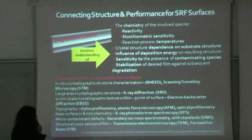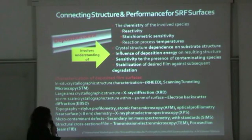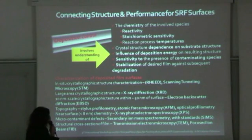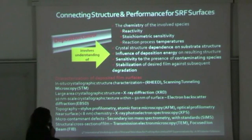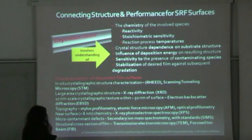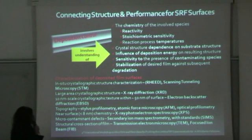In this program, we characterize the film surfaces with different material analysis methods. We perform in-situ crystallographic structure characterization at the College of William and Mary in a UHV sputtering system using RHEED and also STM — scanning tunneling microscopy. Large-area crystallographic structure is analyzed through XRD, or X-ray diffraction. We also make extensive use of electron backscatter diffraction, or EBSD, which gives crystallographic texture within the top 50 nanometers of the surface.